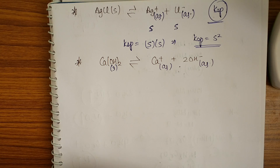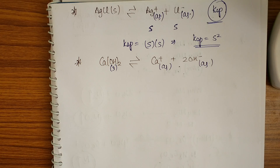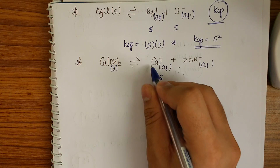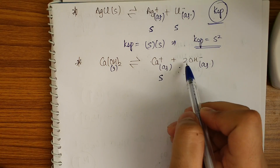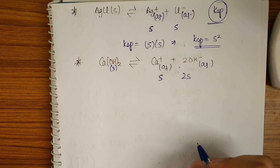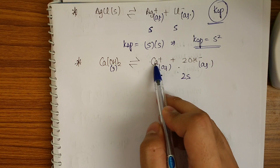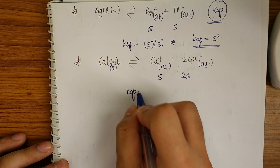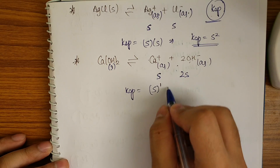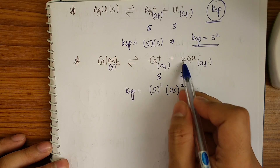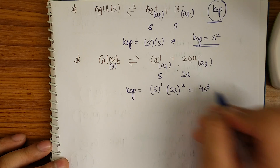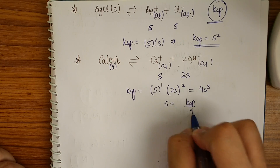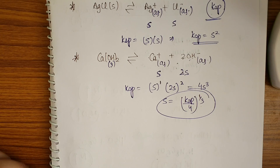For Ca(OH)₂ (solid) → Ca²⁺(aq) + 2OH⁻(aq): the solid is excluded from Ksp. The stoichiometry gives Ca²⁺ = s and OH⁻ = 2s. So Ksp = s¹ × (2s)² = s × 4s² = 4s³. Therefore s = (Ksp/4)^(1/3).